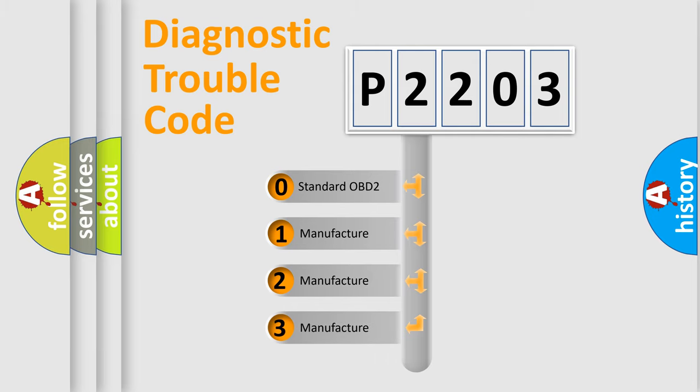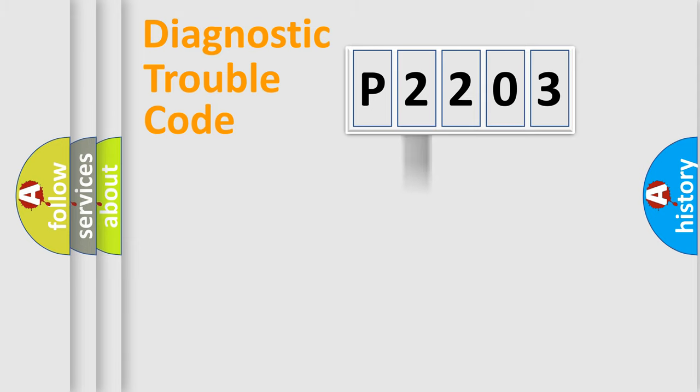If the second character is expressed as zero, it is a standardized error. In the case of numbers 1, 2, 3, it is a more specific expression of the car-specific error.